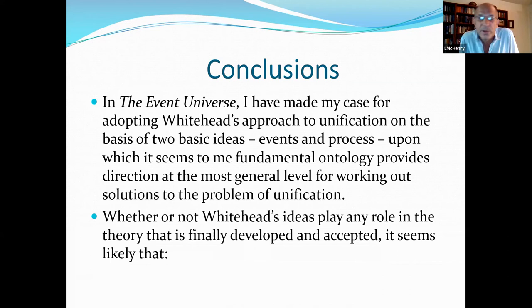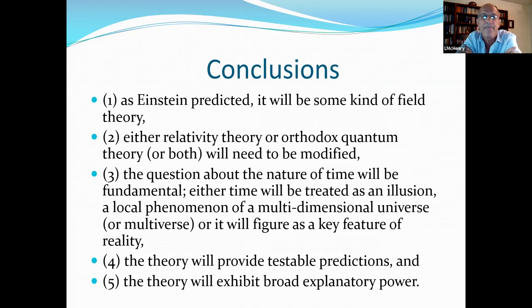Whether or not Whitehead's ideas play any role at all in the theory that is finally developed and accepted, it seems very likely that, in broad outline, the theory's got to have certain kinds of characteristics. First of all, as Einstein predicted, it will be some kind of field theory. Secondly, that either relativity theory or orthodox quantum theory, or both, will need to be modified. Third, that the question about the nature of time will be fundamental. Either time will be treated as an illusion, a local phenomenon of a multidimensional universe or multiverse, or it will figure as a key feature of reality. Four, the theory will provide testable predictions. And five, the theory will have to have broad explanatory power.